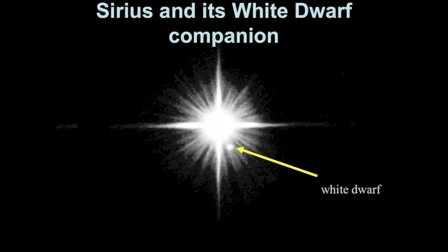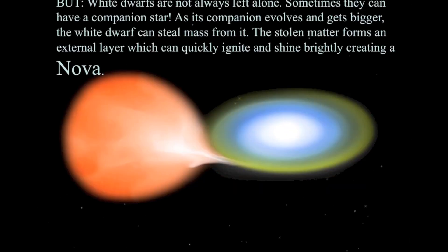If a white dwarf has a companion star — like Sirius A and Sirius B — other things can occur. A white dwarf in a binary system has extremely high surface gravity, which can pull material off its companion star, particularly if they're close together. Material is siphoned off and spirals inward in ever-decreasing orbits onto the surface of the white dwarf in a process called accretion. The white dwarf gains mass and the accreted material gets hotter.